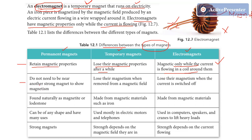The second difference is: permanent magnets do not need to be near another strong magnet to show magnetism — they can behave as a magnet without any other magnet. While temporary magnets need to be within the strong magnetic field of another magnet to behave as a magnet, and they will lose their magnetism when removed from that magnetic field. Similarly, electromagnets lose their magnetism when the electric current is switched off.